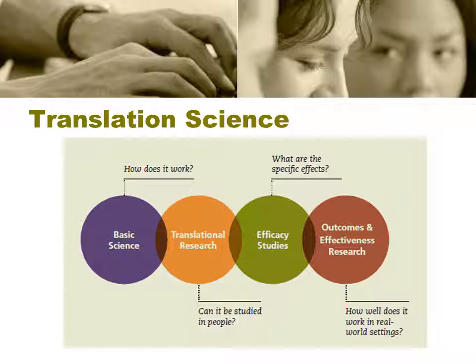And that then is T3. T4 is when we take what's learned in those efficacy studies and do effectiveness research, translating what we learned in randomized controlled trials to the community as a whole. One of my former colleagues at Arizona State University used to say: from bench to bedside, from bedside to the community, and from community to the curbside. And we're also wondering about the effects of moving that to policy.